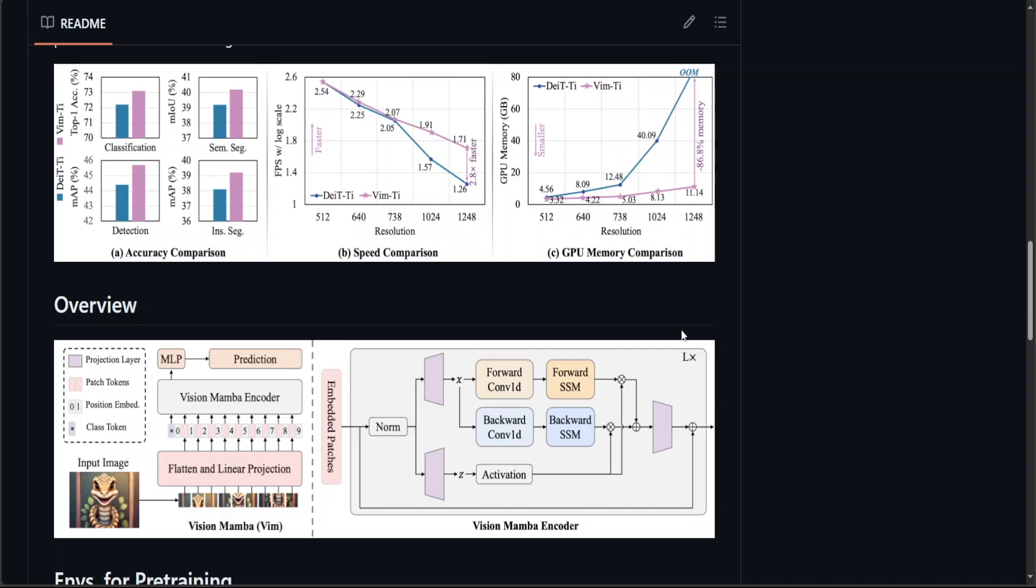On ImageNet classification and various segmentation tasks, this Vision Mamba has achieved higher performance compared to well-established vision transformers like DIET while also demonstrating significantly improved computation and memory efficiency.